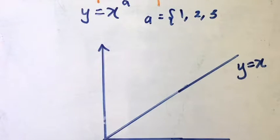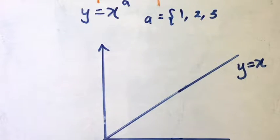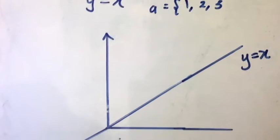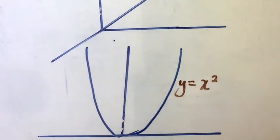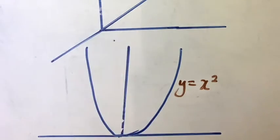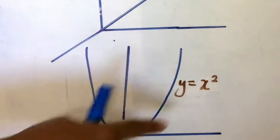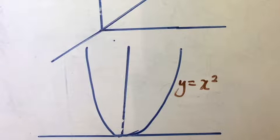When a equals one, the graph is a linear function — a straight line through the origin. When a equals two, it looks like a quadratic function: y is equal to x squared. So y equals x squared is a power function.